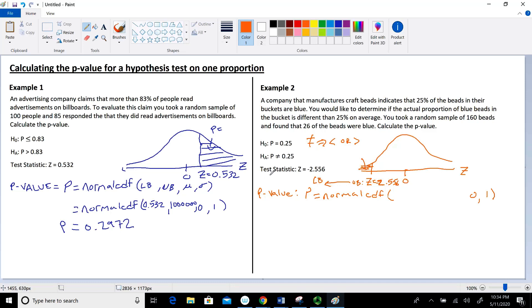Since the distribution goes to negative infinity, our lower bound will be a really small value like negative 1 million. Our upper bound is negative 2.556. The mean is 0 and standard deviation is 1.